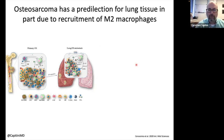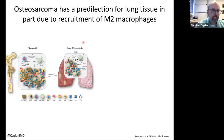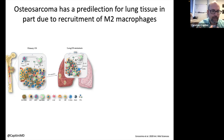I got interested in understanding why the lungs are such an area of interest for osteosarcoma metastases. Part of the reason is the recruitment of cells called macrophages — M2 macrophages. The normal job of macrophages in the lung is to act as scavengers and help clean up debris, but tumors can co-opt them and use them as bodyguards to protect themselves from the immune system. Biopsying a primary osteosarcoma from bone shows a rich, diverse matrix of cells — a mix of pro-inflammatory, anti-inflammatory, tumor cells, blood vessels, and stroma cells.